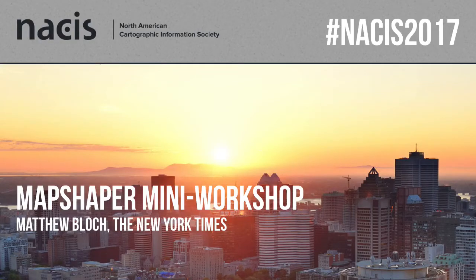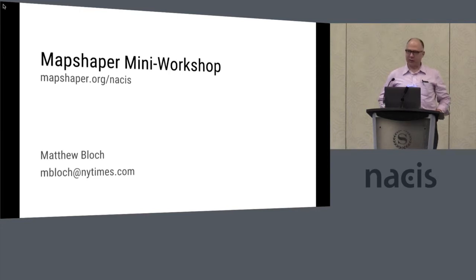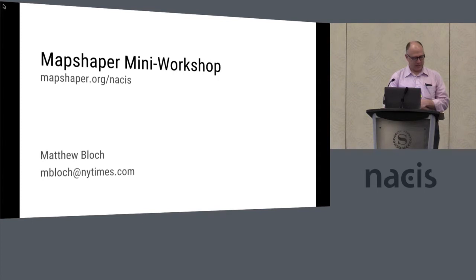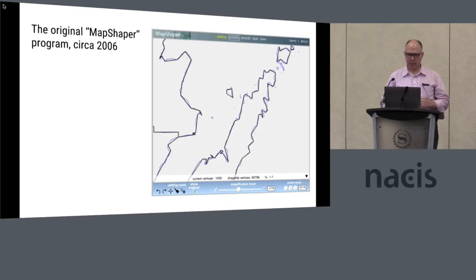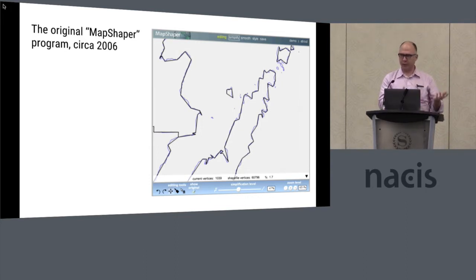I'd like to start by telling you a bit about the history of this project. MapShaper is a software tool that I started working on in grad school in Madison. My advisor was Mark Harrower, and we demoed a very early version of this program at NASIS in 2005. The first version of MapShaper was basically a special-purpose tool — it could do one thing: simplify polygon shapefiles while maintaining adjacent boundaries between neighboring polygons. If you Google MapShaper, you'll see some references to that early program, including a paper that Mark and I wrote together.